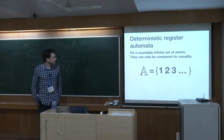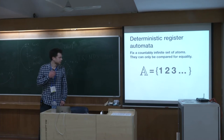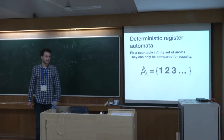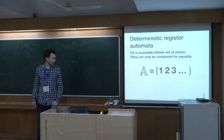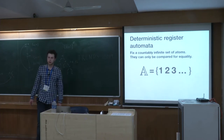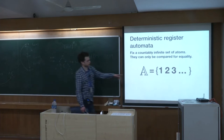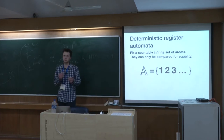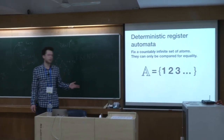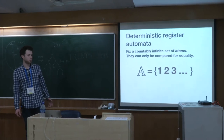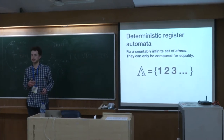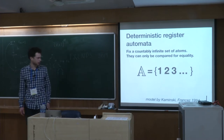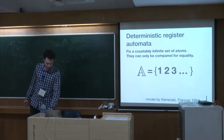The classical model defined by Kaminsky and Francis for infinite alphabets is that we have a set that is countably infinite and the elements can only be compared for equality. This means that one over here is just as good as two over there, but they are just not equal. We cannot say that a letter is even, for example, but we can say that the first and second letters are equal or the first and last letters are equal. This is a model by Kaminsky and Francis from 1994.